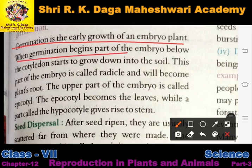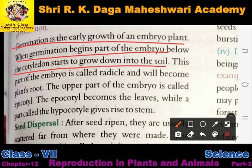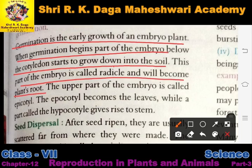When germination begins, the part of the embryo below the cotyledon starts to grow down into the soil.